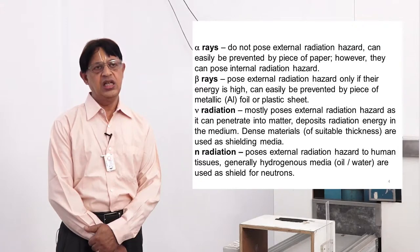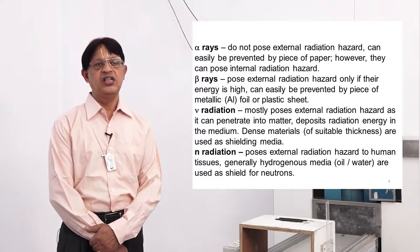Similarly, neutron — another particulate radiation — can also be attenuated and shielded, but again it is not in the scope of this experiment. In case of neutron, we make use of hydrogenous materials like alkothene, polythene, paraffin, oil, or water. But we are not going to talk about neutron radiation during this experiment.